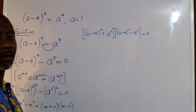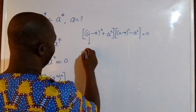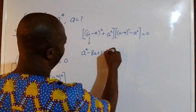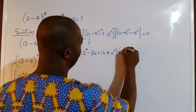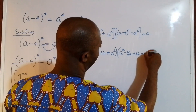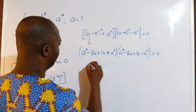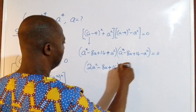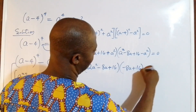Now I'm going to further simplify. If we expand, we get a squared minus 8a plus 16, plus a squared, all in brackets — and similarly, a squared minus 8a plus 16 minus a squared. From here, a squared plus a squared gives us 2a squared minus 8a plus 16, while a squared minus a squared gives zero, leaving us with minus 8a plus 16.